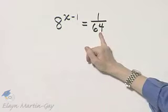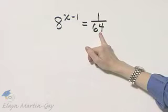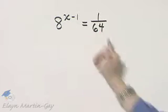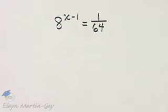I can write 1 over 64 as 8 raised to some power. So in this case, we can make the bases the same.